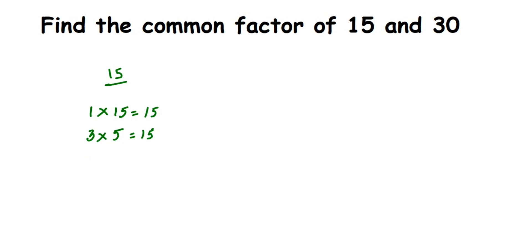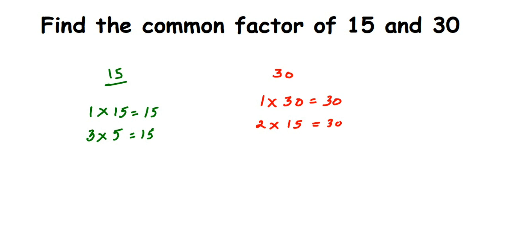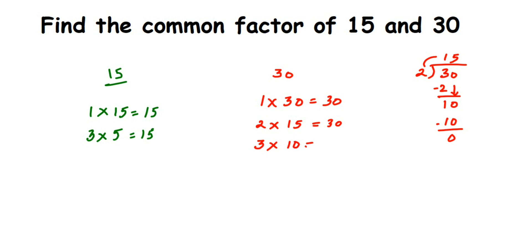Now for 30, checking tables 1 to 10: 1 × 30 = 30. Since 30 ends in 0, it goes in the 2 table: 2 × 15 = 30. You can verify by dividing 30 by 2. Next, 3 × 10 = 30. It doesn't go in the 4 table, but 5 × 6 = 30. Since 6 × 5 is the same as 5 × 6, we don't write it again.